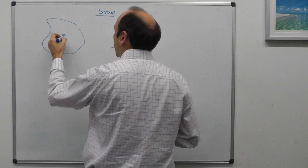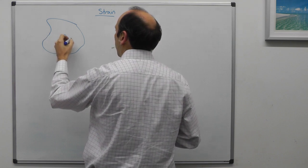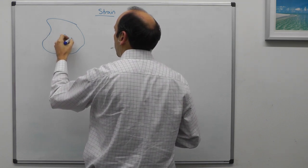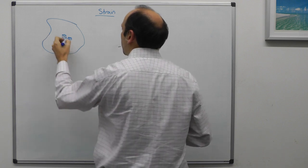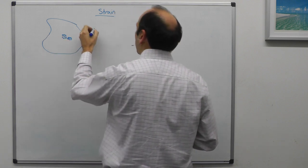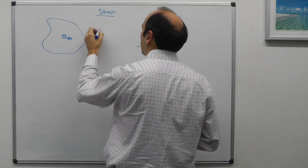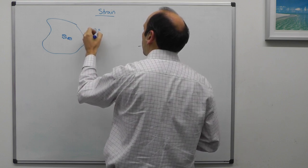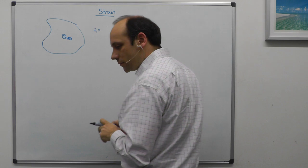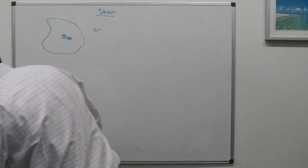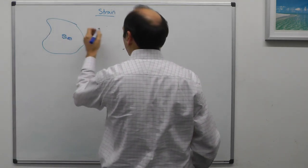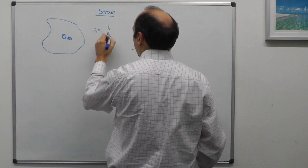Now imagine that the displacement of that volume through the body due to some deformation is described by a vector u, that is ui, which is called the displacement field, that is u1, u2, u3.